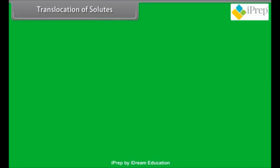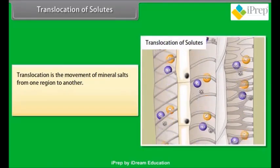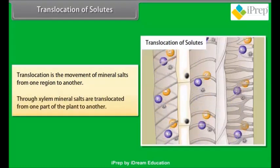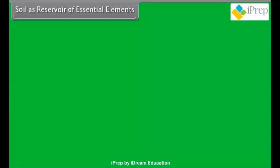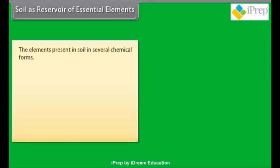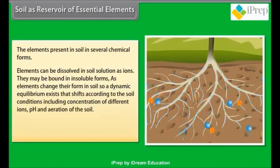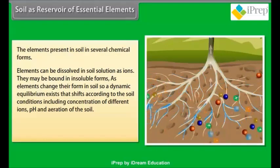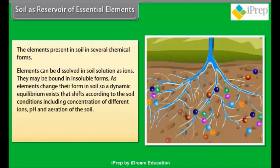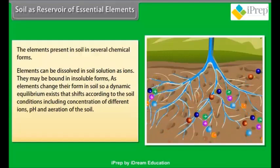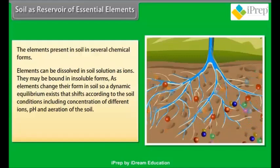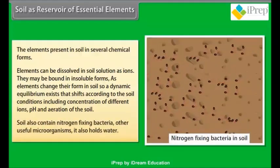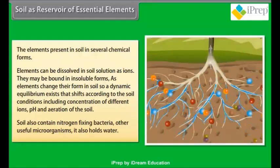Translocation of solutes: translocation is the movement of mineral salts from one region to another. Through the xylem, mineral salts are translocated from one part of the plant to another. Soil as a reservoir of essential elements: elements present in soil exist in several chemical forms. They can be dissolved in soil solution as ions or bound in insoluble forms. A dynamic equilibrium exists that shifts according to soil conditions, including concentration of different ions, pH, and aeration of the soil. Soil also contains nitrogen-fixing bacteria and other useful microorganisms, and holds water.